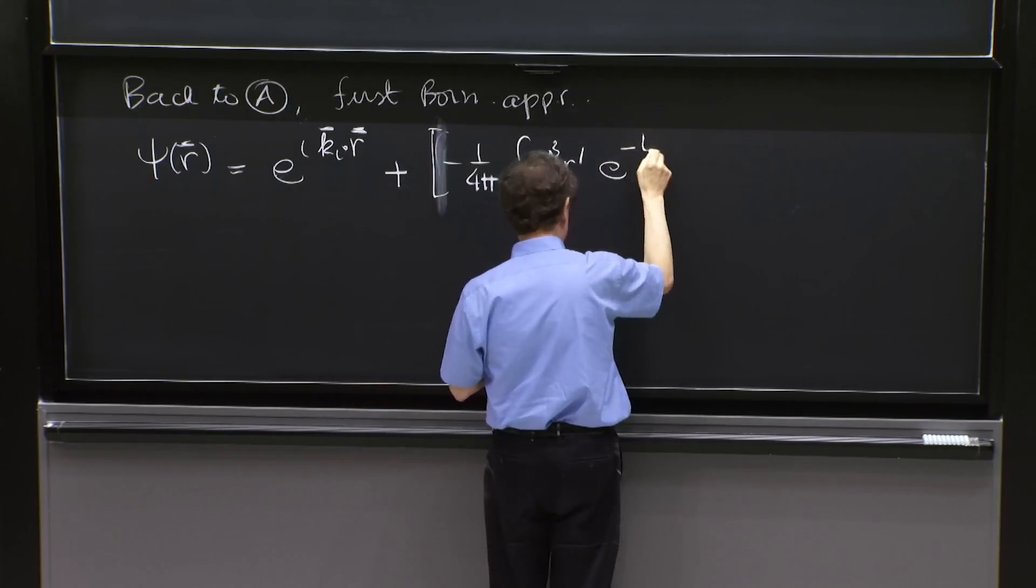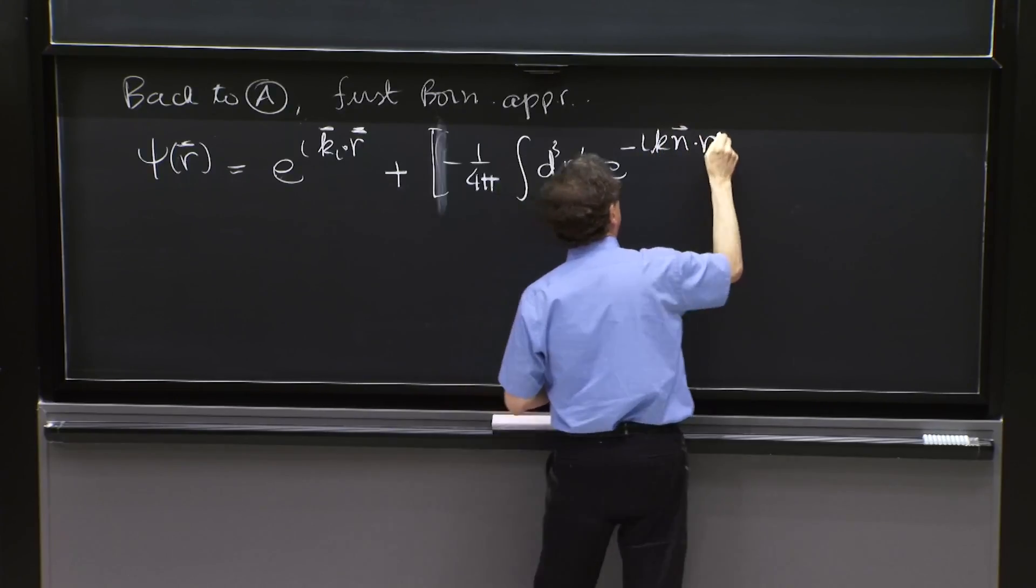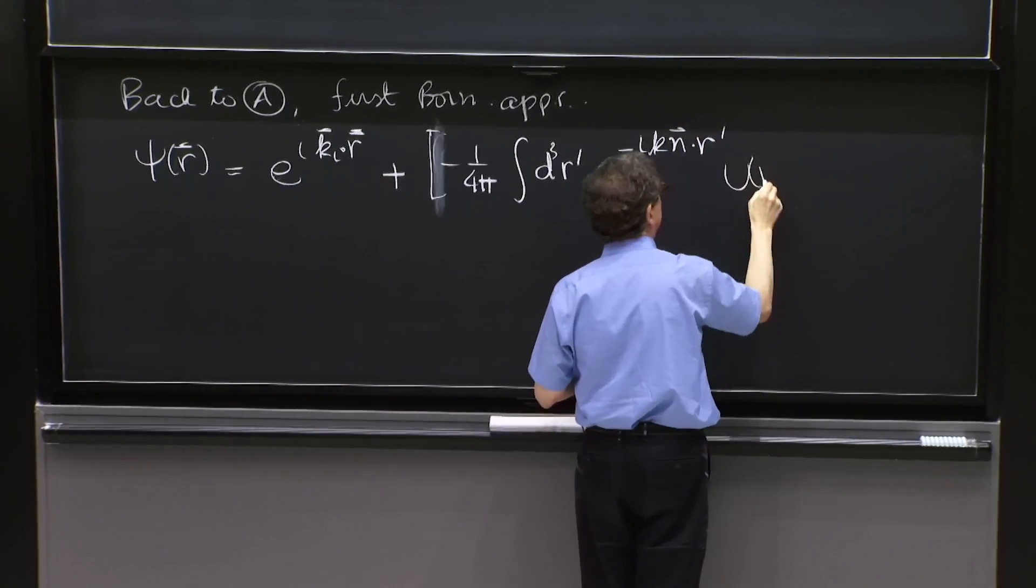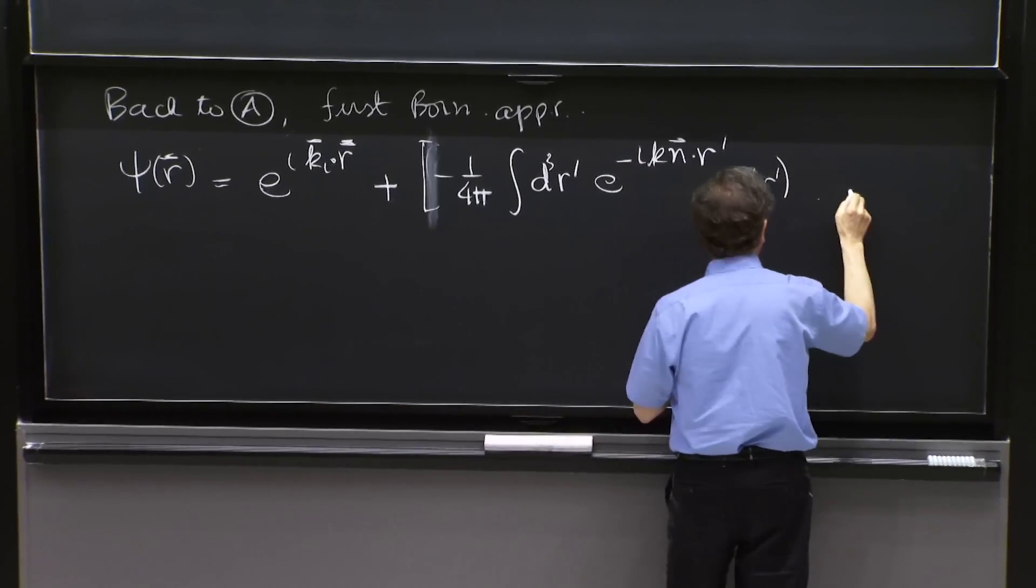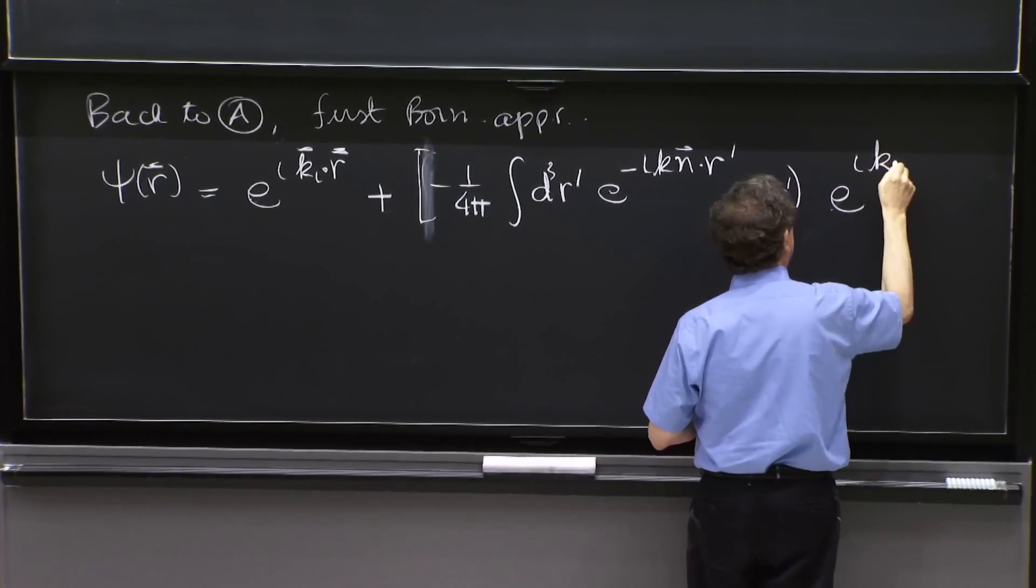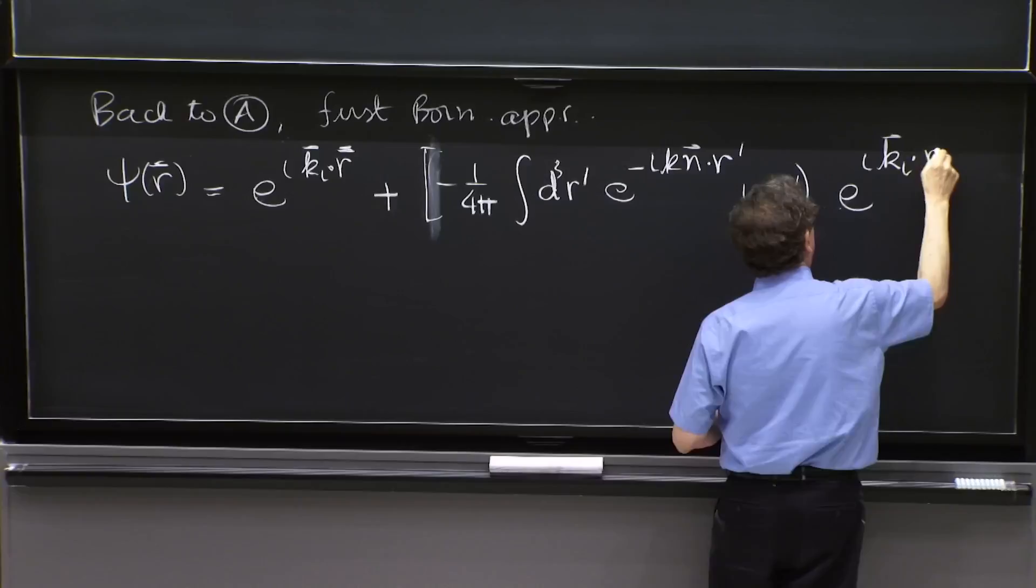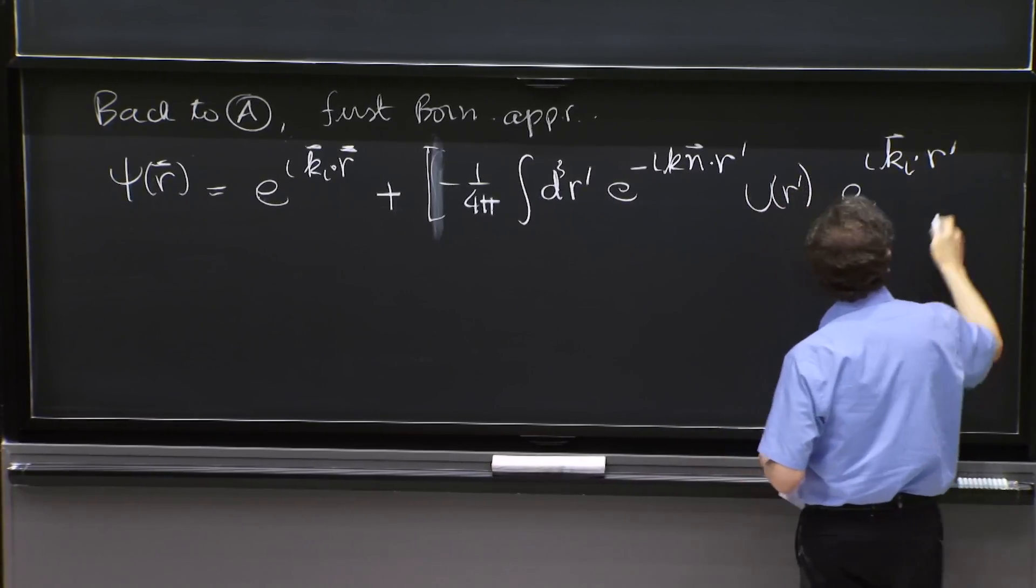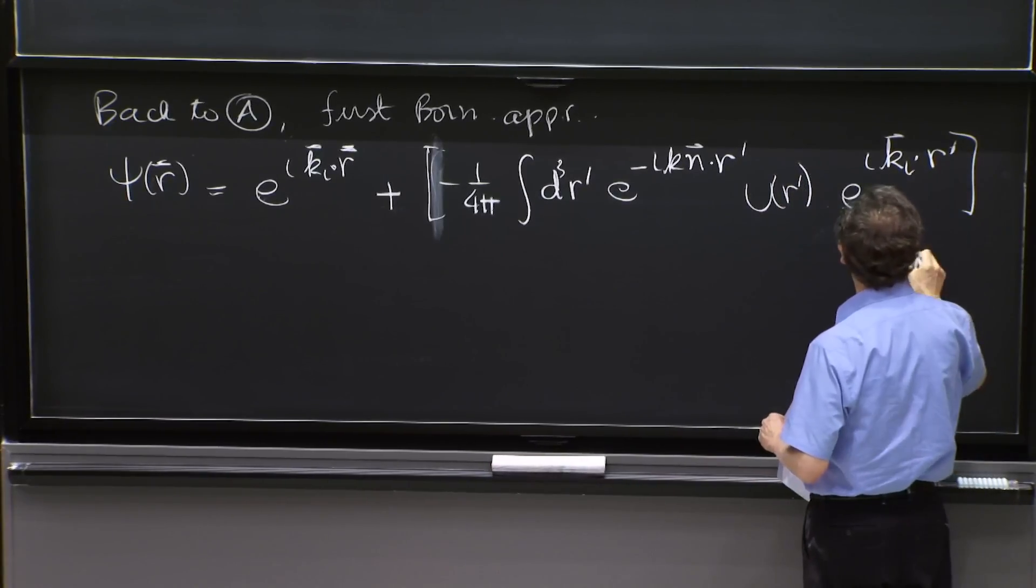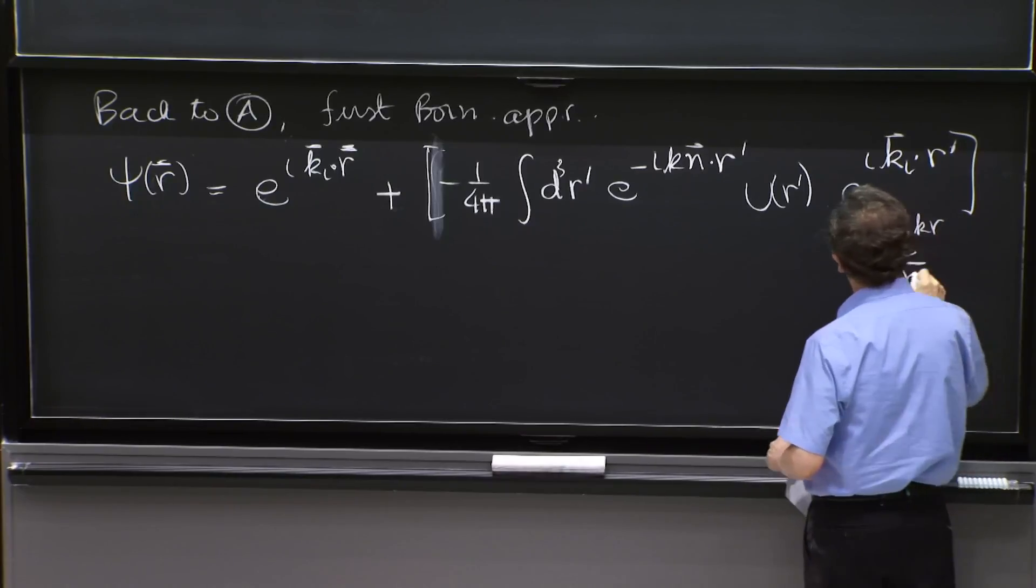and we have here minus 1 over 4 pi integral d cube r prime, e to the minus ikn dot r prime, u of r prime, and e to the iki dot r prime.